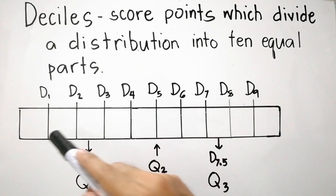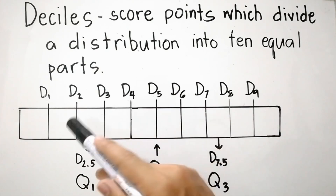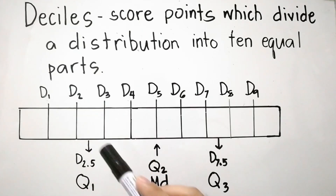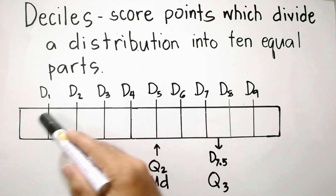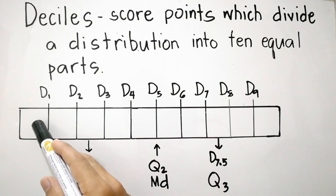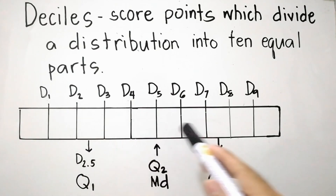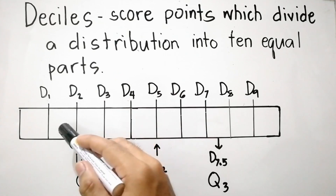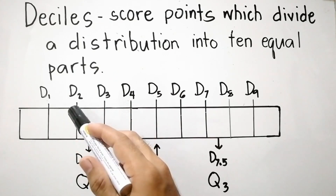Since these score points divide the distribution into 10 equal parts — counting one through ten — each part contains 10 percent of the distribution. Ten percent of the distribution is less than or equal to D sub 1, so ninety percent is greater than or equal to D sub 1. For D sub 2, twenty percent is less than or equal to D sub 2.